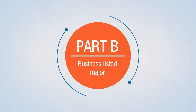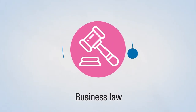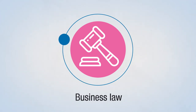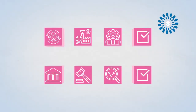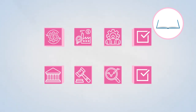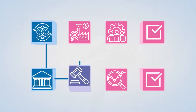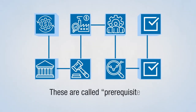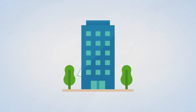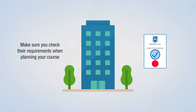Part B: Business Listed Major. You need to decide on and develop thorough knowledge of at least one particular business discipline to get your degree. This is called a major and is recognised on your final transcript when you graduate. Each major is made up of eight units. Always check the handbook to find the rules for any major or minor, as there are compulsory units you need to plan for and you usually need to complete units in a certain order — these are called prerequisites. If you want to use your degree to get accreditation from a professional body, make sure you check their requirements when planning your course.